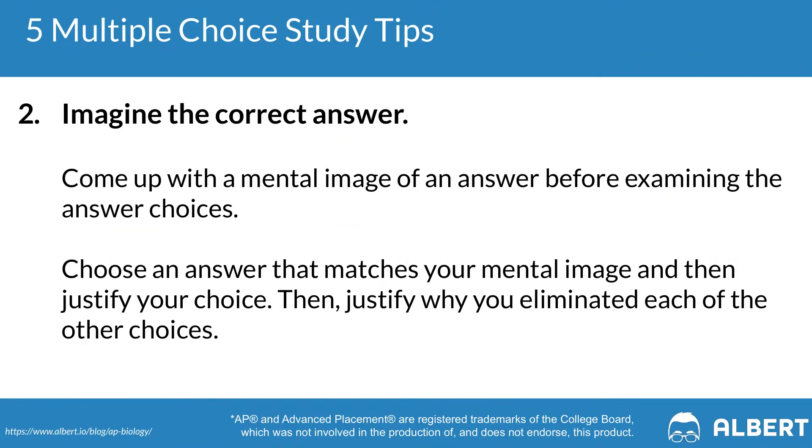The second thing that can be helpful for the multiple choice section is to imagine the correct response. Once you've read the question once or twice, try to think about what the correct answer might look like before you actually read the answer choices. By doing so, you'll prime your brain to look for the right answer quickly. Albert can be a helpful resource here because it provides breakdowns of the correct and incorrect answer choices so you better understand specifically why you got a particular answer right or wrong.